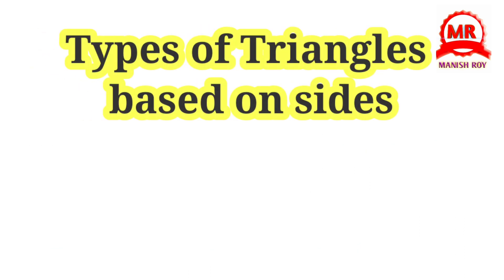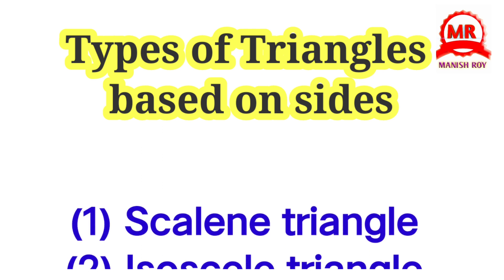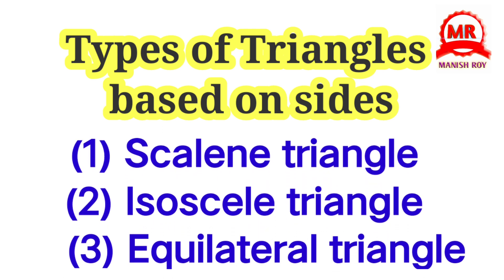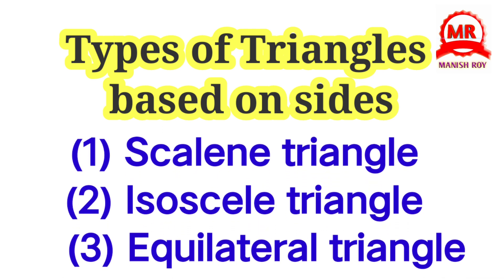There are three types of triangles based on sides: scalene triangle, isosceles triangle, and equilateral triangle.